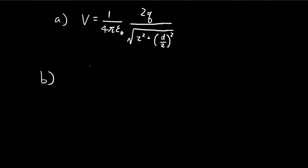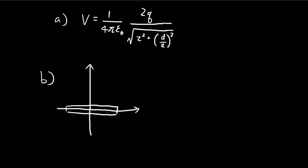For part B, there's obviously a lot more mathematics going on, and here you need a bit of calculus. In part B, we have a line charge, and we're trying to find the potential at a point which is at a distance Z from the center of this line charge. This line has a uniform charge density of lambda, and it has a length of 2L. I'll label this axis as L, and when we integrate, we're going to integrate in terms of DL along this direction.